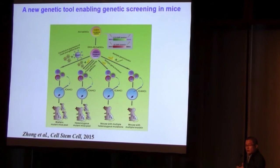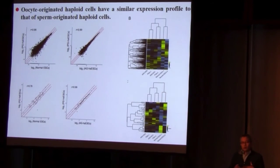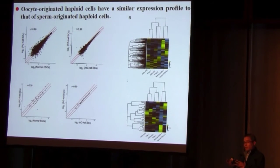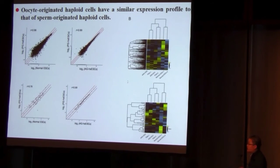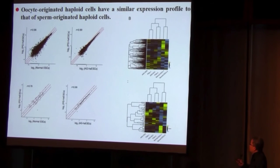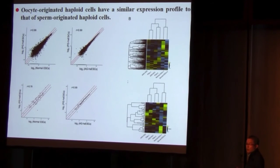So the take-home message is that our haploid cell-mediated semi-cloned technology provides a new genetic tool enabling genetic screening in mice. Next, we wanted to know the difference between haploid cells from oocytes and from sperm. As I just showed you, oocyte-originated haploid cells could not support full development after injection into oocytes. We wondered what the difference was between these two kinds of haploid cells. Interestingly, from gene expression analysis we found no difference between these two types based on whole-gene or imprinted-gene profiles.